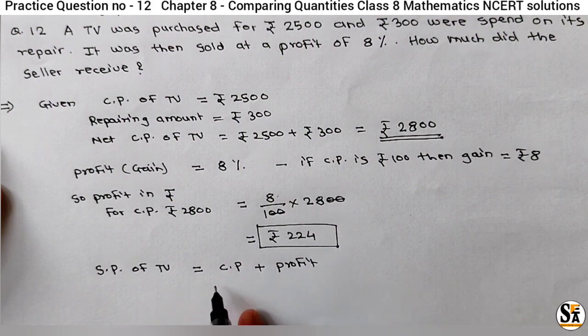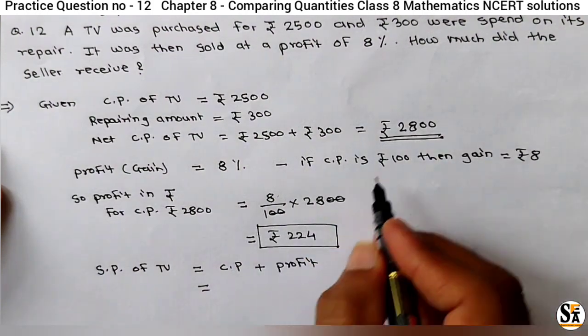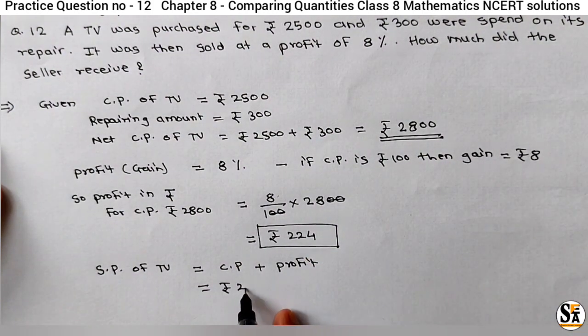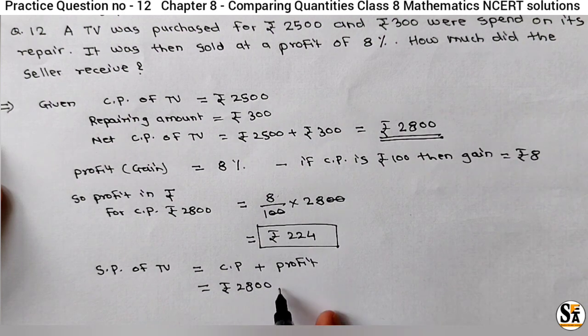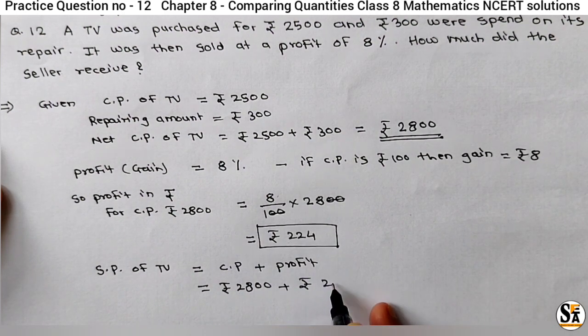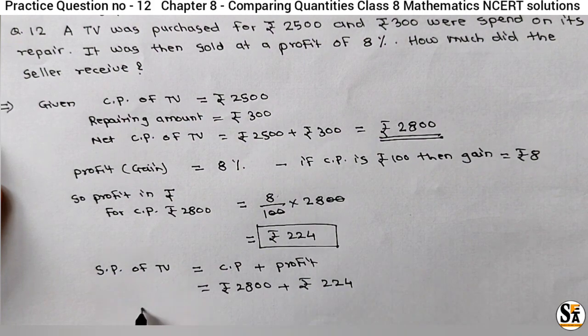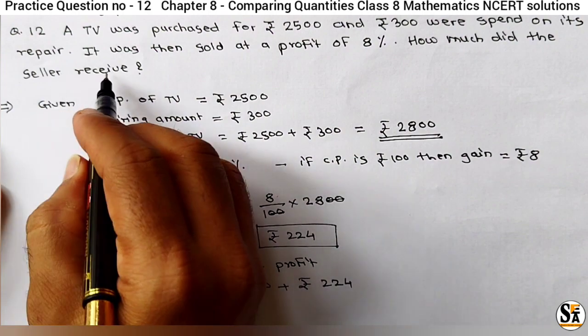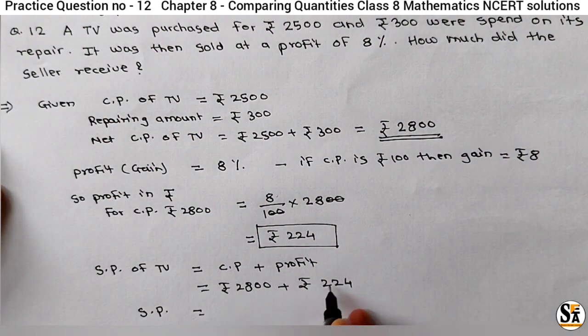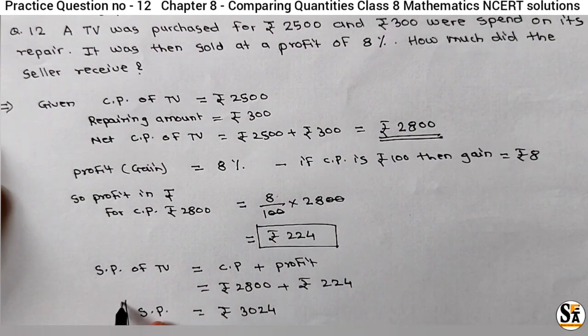So we know net CP is Rs 2800 plus profit is Rs, just calculated, 224. So selling price, means that seller receives, is equal to, if we add this, we will get here 3024. So this is our selling price.